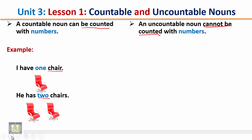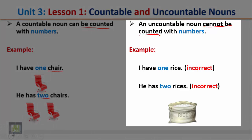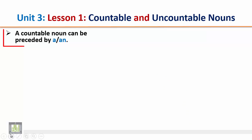On the contrary, an uncountable noun cannot be counted with numbers. Example: 'I have one rice' — this sentence is incorrect because the word 'rice' is an uncountable noun. It cannot be counted, so we cannot say 'I have one rice.' Also, we cannot say 'two rices' because 'rice' is an uncountable noun.